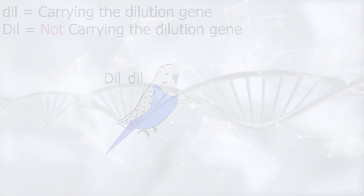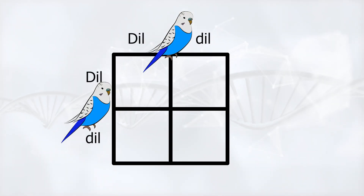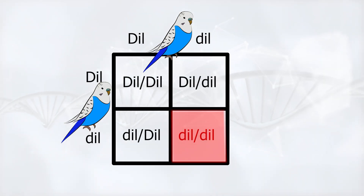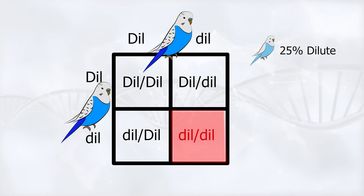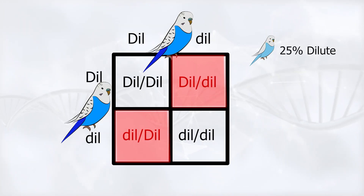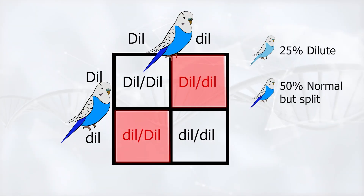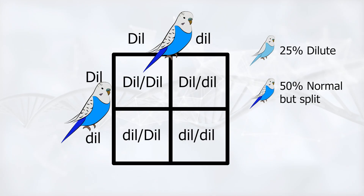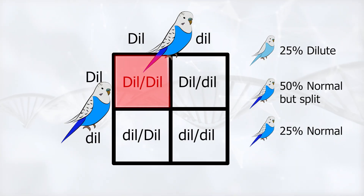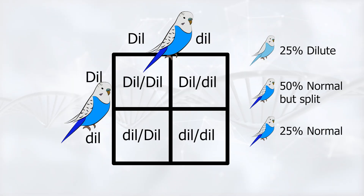Here's a Punnett square of two budgies that look normal but are both carrying the dilution gene. If we look at the square, you'll notice something really interesting: 25% of the chicks will actually be dilute budgies, because they inherit two copies of the recessive dil. 50% of the chicks will look normal but they'll still be carrying the dil gene, meaning they can pass it on to their offspring. And the last 25% will be completely normal — no dilution gene at all. So even if two parents don't look like they have the mutation, if they are carriers, there's always a chance of producing dilute chicks.